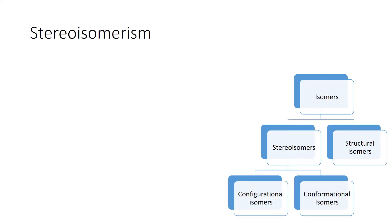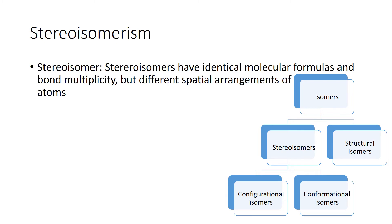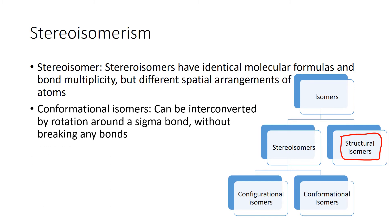Let's talk about stereoisomers. Stereoisomers are isomers that have identical molecular formulas and bond multiplicity, but they are arranged differently spatially. We've already talked about structural isomers like butan-1-ol and butan-2-ol. Stereoisomers have more to do with the arrangement of atoms in space — they're not just connected differently. We have two main types: conformational isomers and configurational isomers.